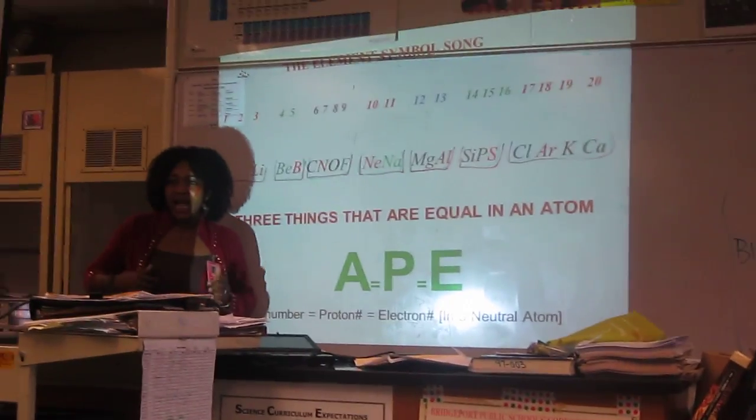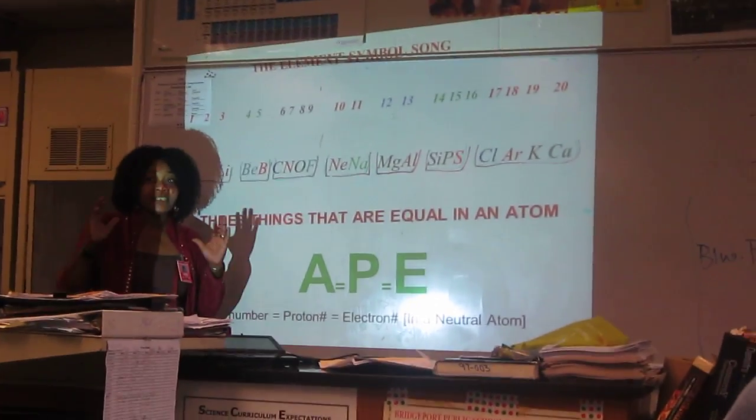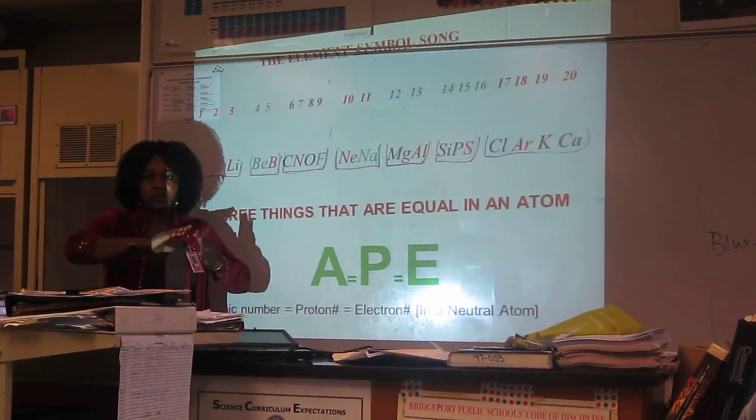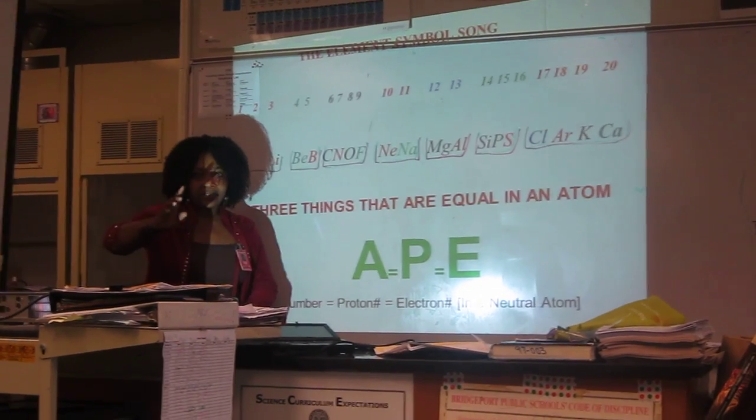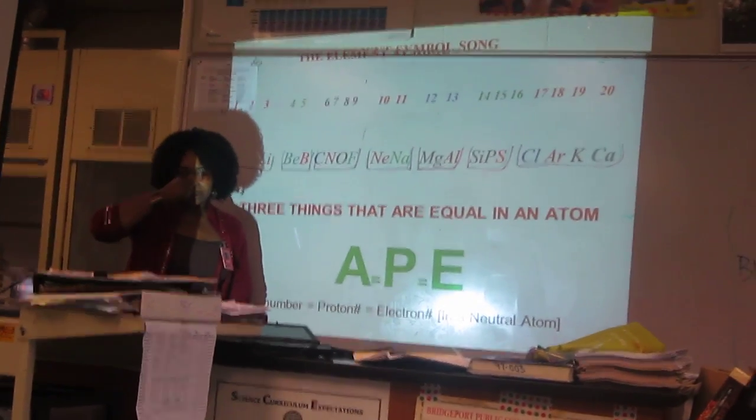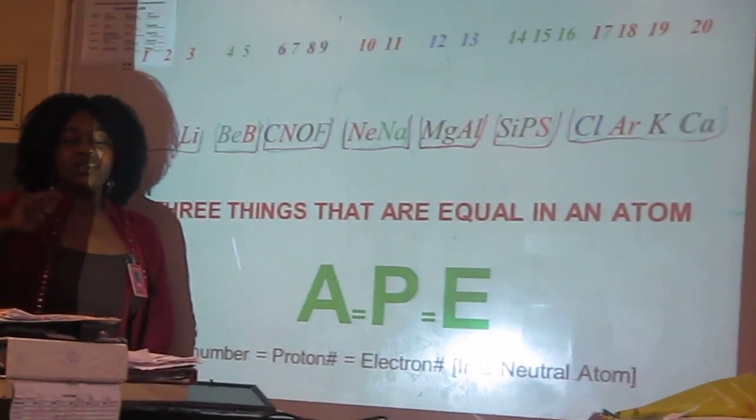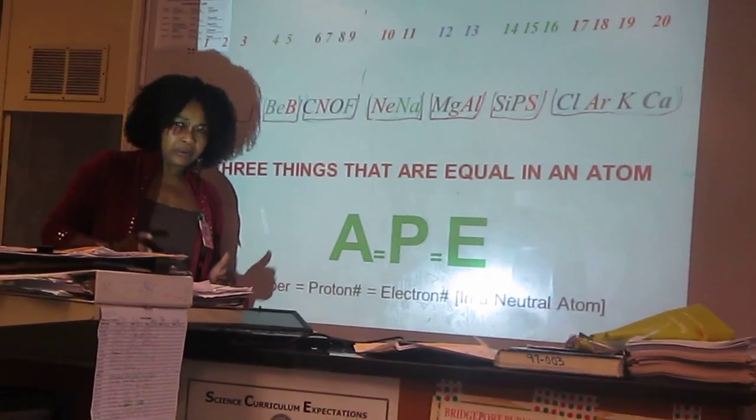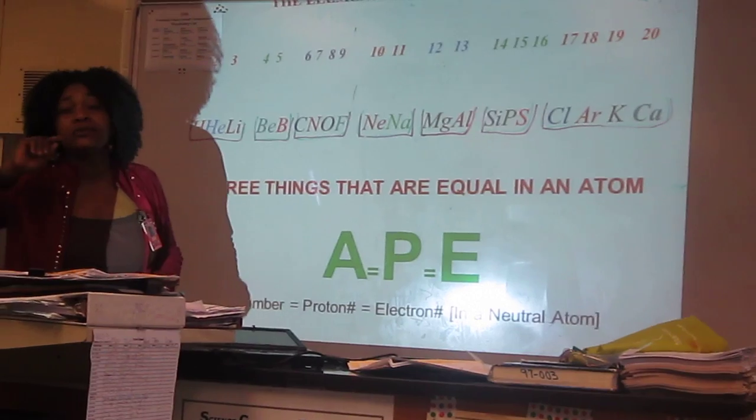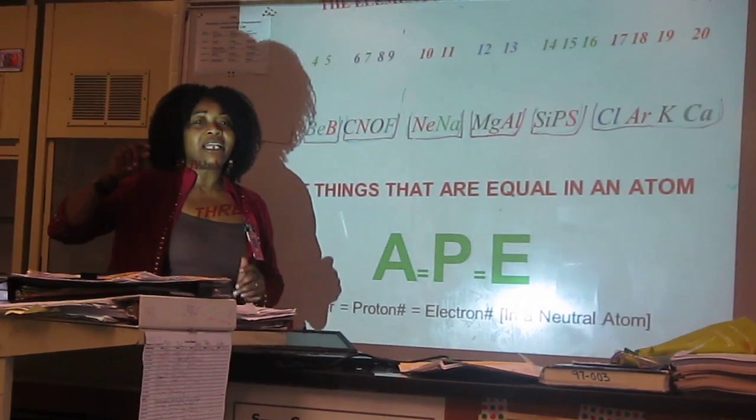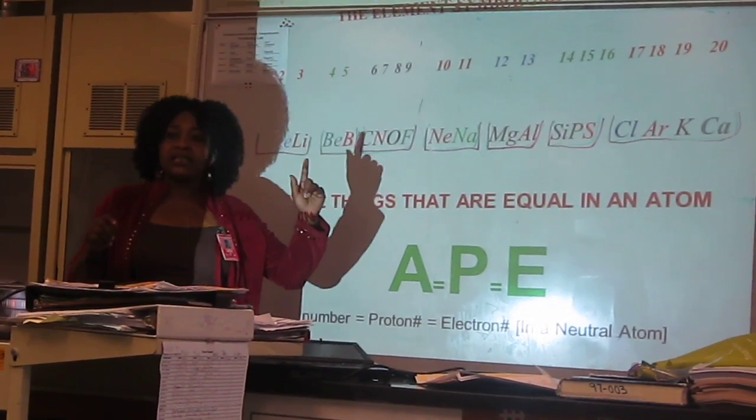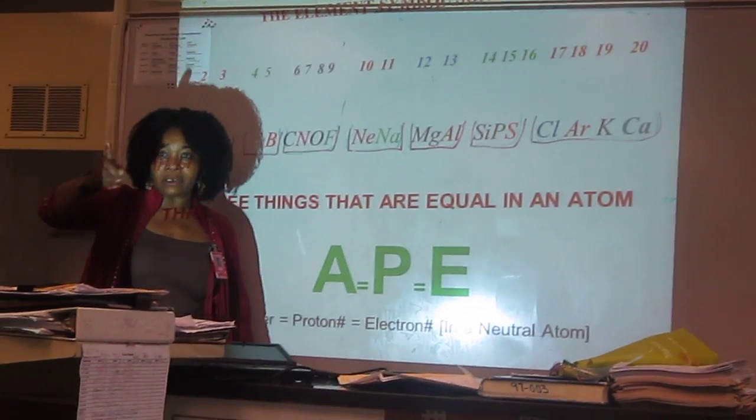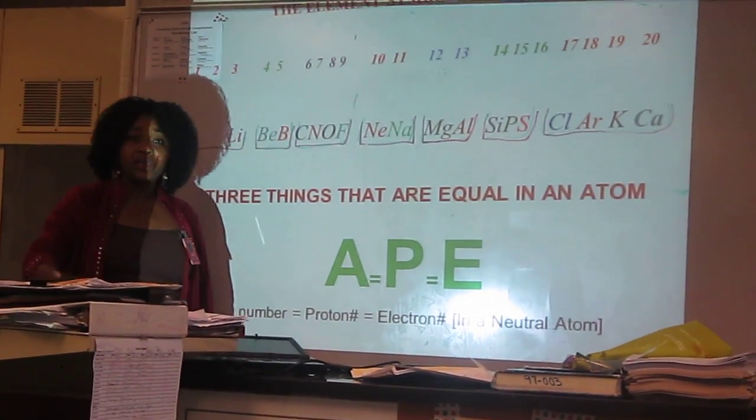Now, the atom has to be electrically neutral. So if an atom has one positive charge, in order to be electrically neutral, it has to have what other charge? Negative. Negative charge. So from prior knowledge, what particle in the atom has a negative charge? The electron. The electron. Therefore, if there is one proton, there has to be how many electrons? One. In order to be? Neutral.